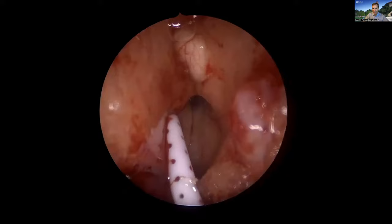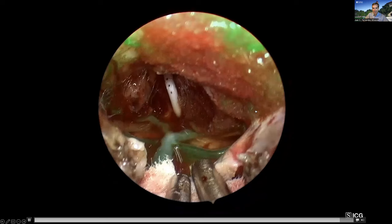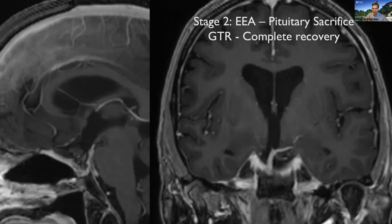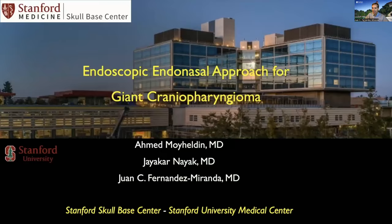With ICG visualization, you can see the hypothalamus bilaterally nicely preserved. You can see the indentation that the tumor caused, but we performed a good accurate resection of this tumor, and this patient has an intact hypothalamus. Of course, the patient needed full pituitary replacement, but had excellent recovery of cognition and no hypothalamic complications.